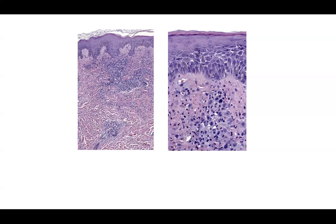Type D lymphomatoid papulosis features CD8-positive rich cells and can mimic aggressive epidermotropic CD8-positive lymphoma. Type E shows angioinvasion, and type F shows folliculotropic collections.